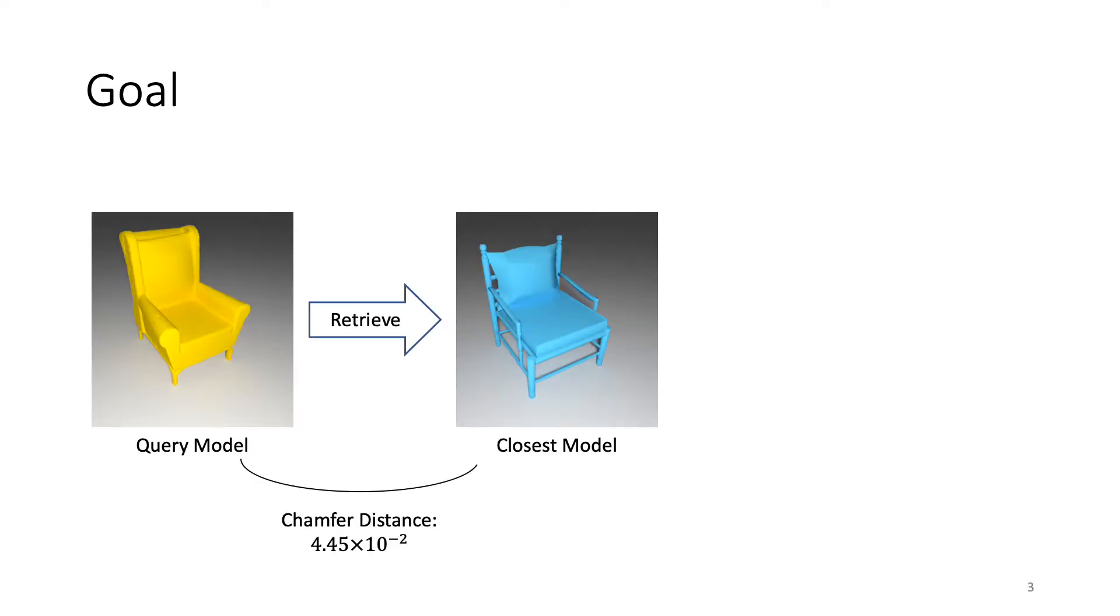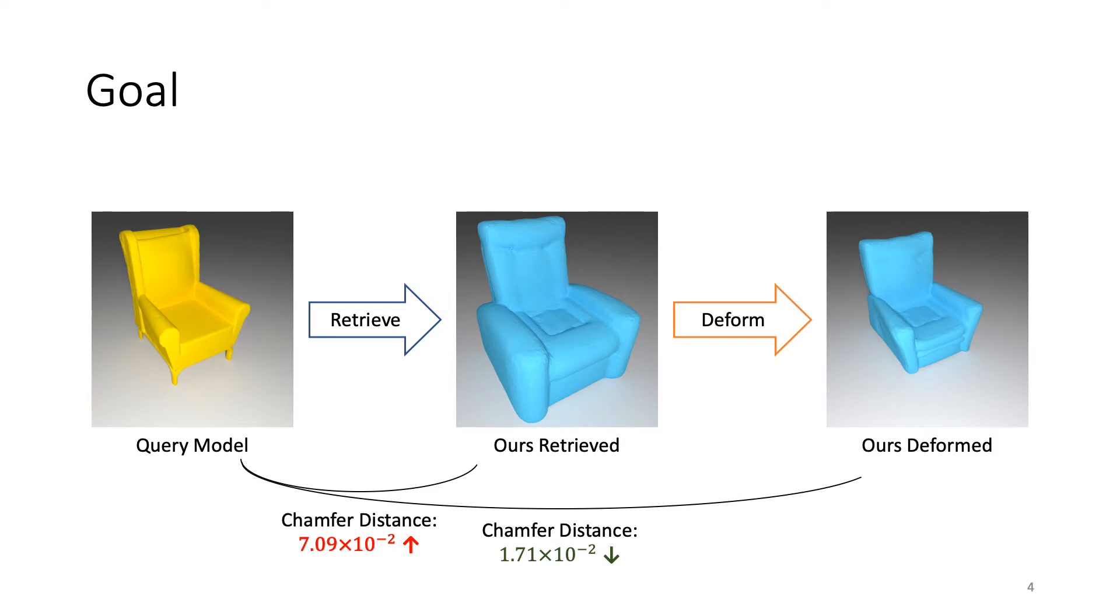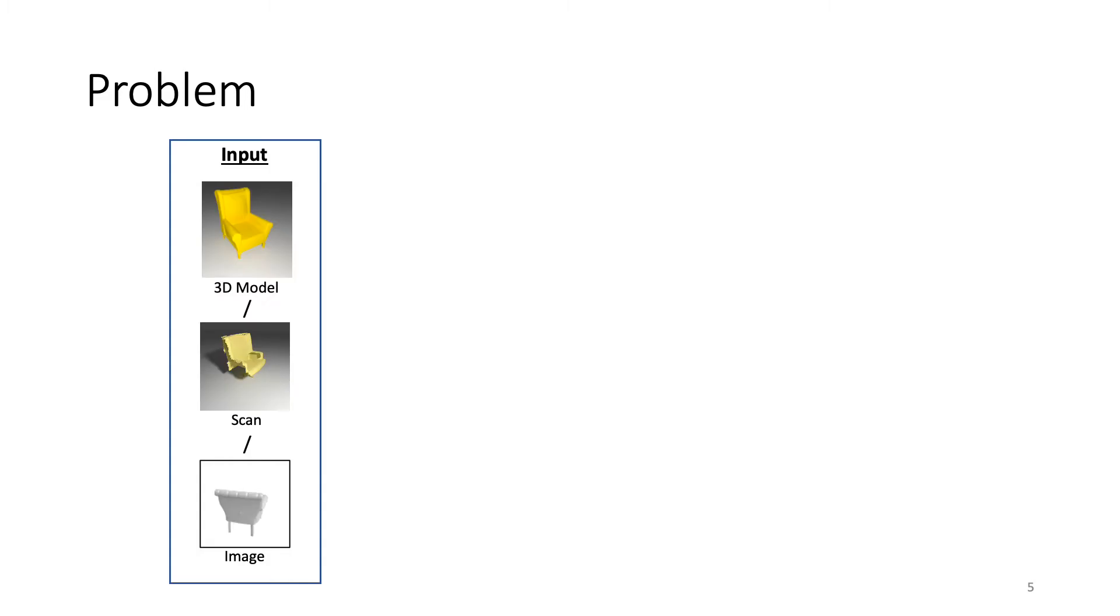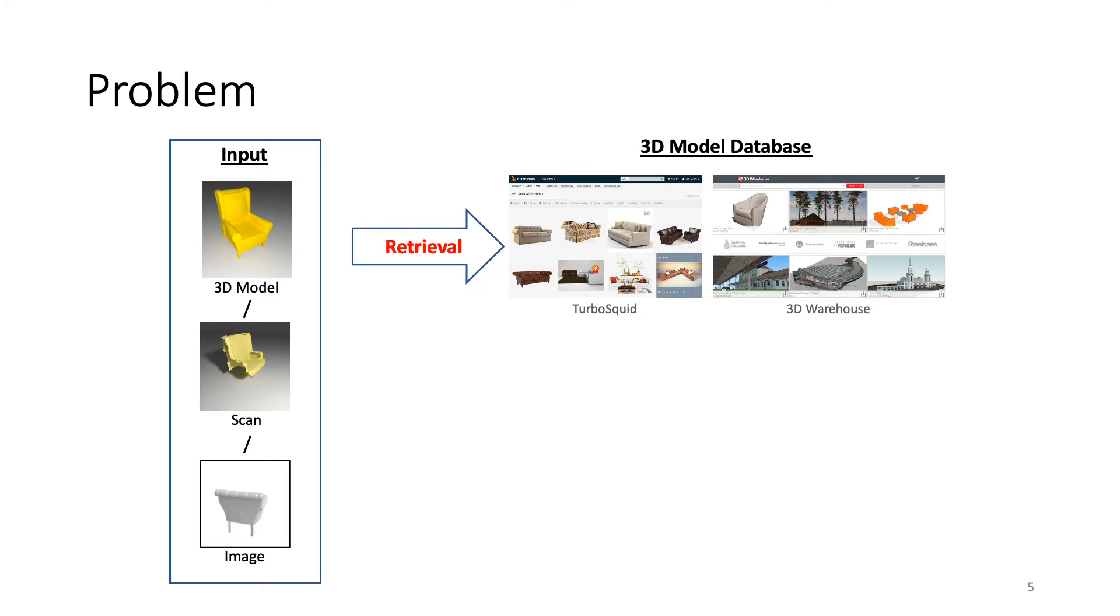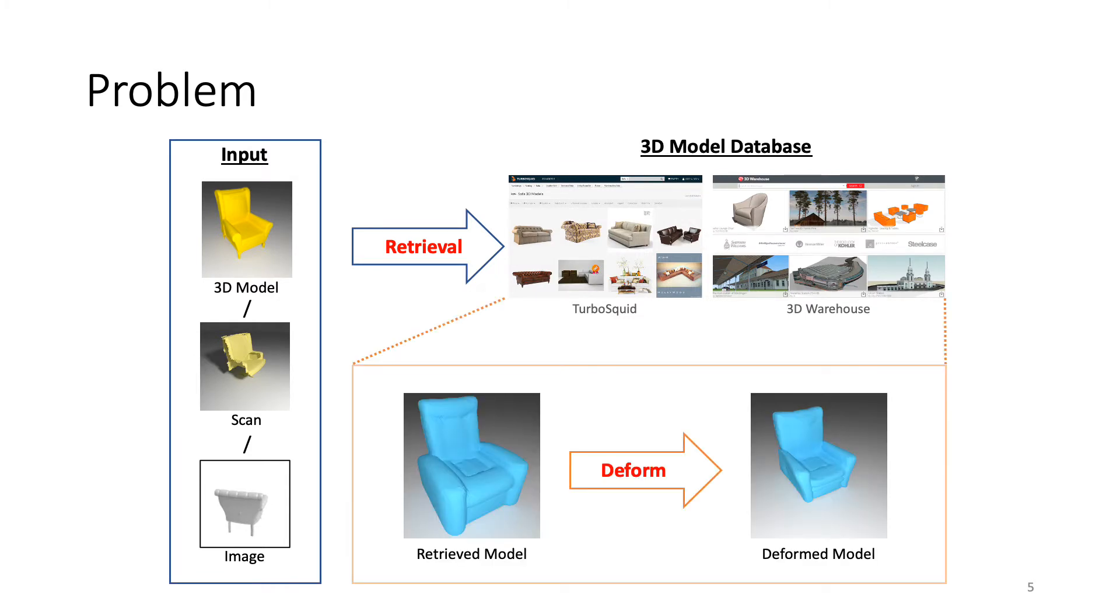The setting becomes more concrete with this example. Given this query model, retrieving the geometrically closest model does not result in good fitting as it has distinct geometric and semantic differences. We aim to retrieve a model that may be initially far from the query, but results in good fitting after deformation. Thus, our problem becomes, given a query 3D model, scan or image, we retrieve a model from a given shape database and deform it in order to fit the query. This enables better fitting and outputs a clean CAD model with preserved fine structures.